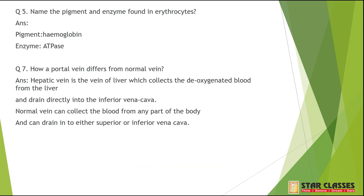Next question: Name the pigment and enzyme found in erythrocytes. The pigment found is hemoglobin, and the enzyme found is ATPase.